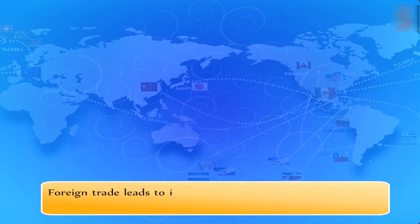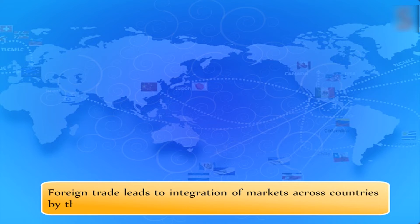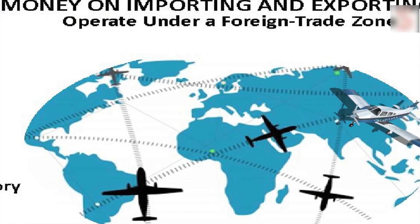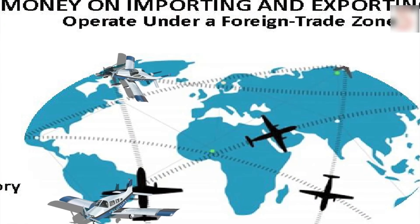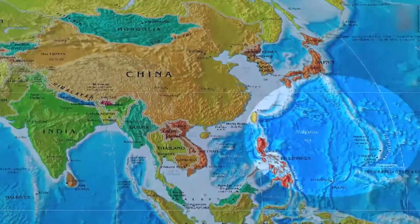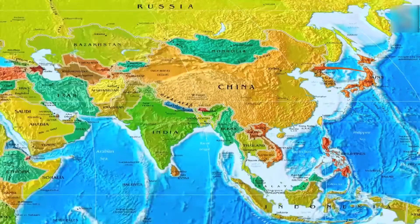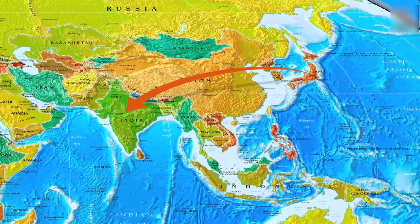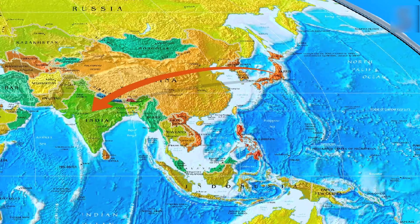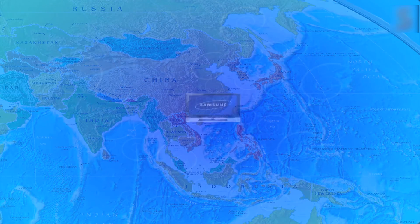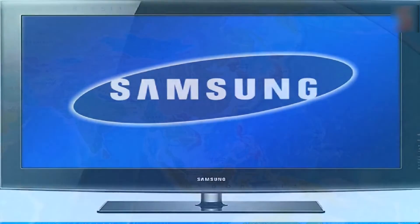Foreign trade leads to integration of markets across countries through the process of imports and exports. Producers can make their goods available in markets beyond domestic ones via exports. Likewise, buyers have more choices on account of imports from other countries. For example, Japanese electronic items are imported to India and have proved tough competition for less technologically advanced companies. Most of us buy Samsung TVs rather than buying Texla or BPL.